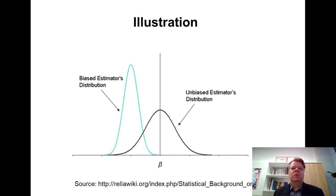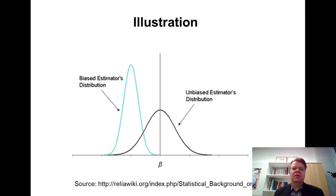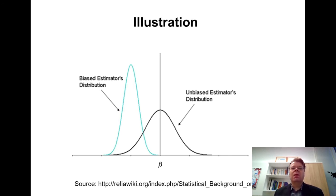There is another density function shown in light blue, illustrating a biased estimator. There is variation according to this estimator, but there is a systematic downward bias — your estimates would typically be lower than the true beta. This is what bias means: a systematic deviation to the left or right from the true beta. This example illustrates why it is desirable to have an unbiased estimator.